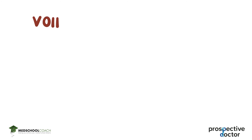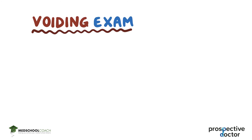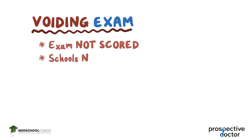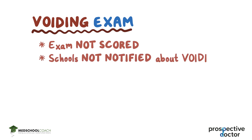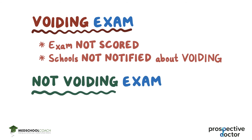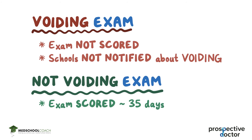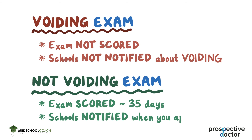After completing all four sections, you'll be given the option to void your MCAT exam. If you choose to void your exam, it will not be scored and medical schools will not be notified that you voided it. If you choose not to void, your exam will be scored and it will take about 35 days to receive your scores. All of your MCAT scores will be sent to medical schools when you apply, unless you voided your exam.